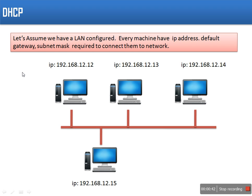First of all, we are taking a simple example. What is the need of DHCP? In this example, as you can see, we are having four machines. Every machine is having an IP address. In order to connect to a network, we need some other details like default gateway, subnet mask, and DNS address. So these all details are required.